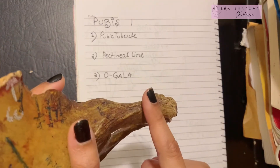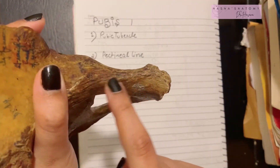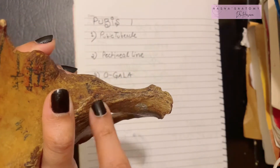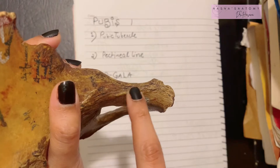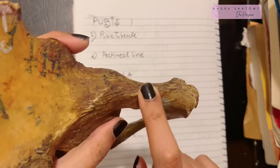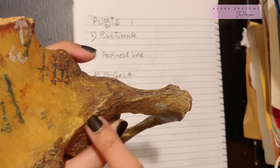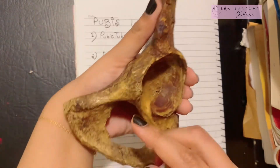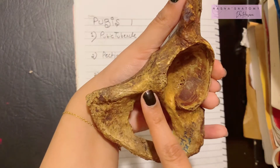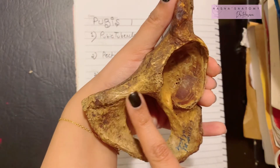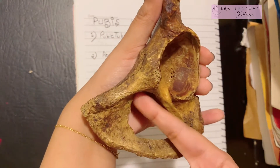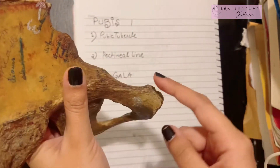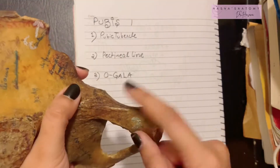Now let's talk about the superior ramus of the pubic bone. The superior ramus consists of a superior border, which is quite prominent and sharp. This superior border is also known as the pectineal line. There is also an anterior border, known as the obturator crest, and finally an inferior border, which forms the superior part of the obturator foramen.